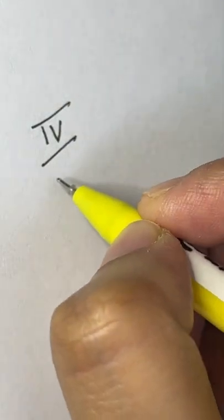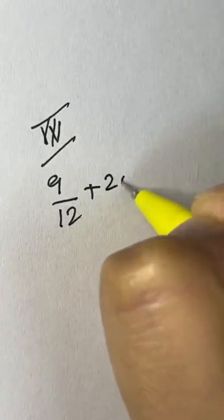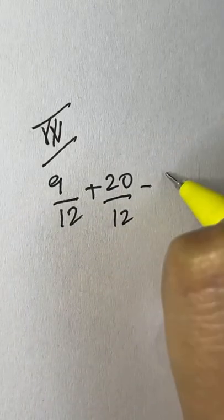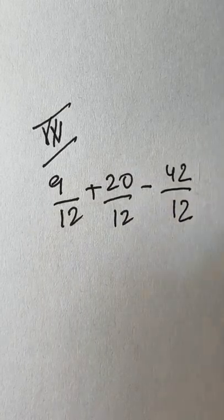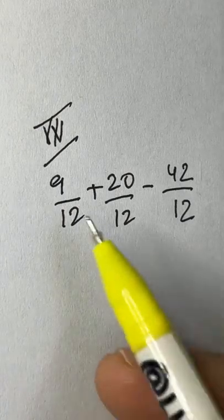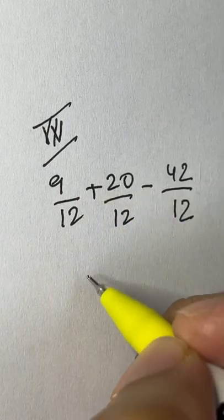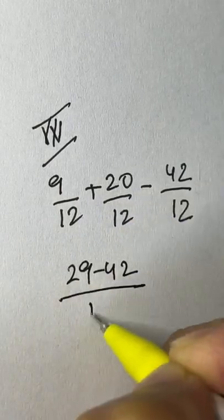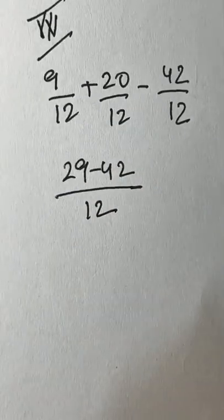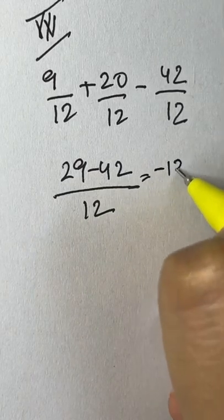Here's another example with like denominators: 9 over 12 plus 20 over 12 minus 42 over 12. When all denominators are the same, just add or subtract the numerators. 9 plus 20 is 29, then 29 minus 42 gives you negative 13 over 12.